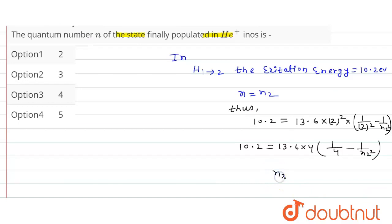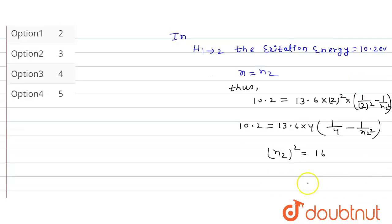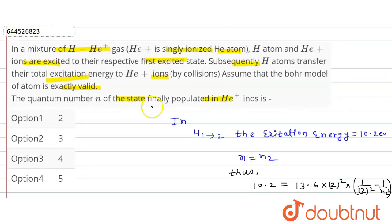So from here, n2 squared is equal to 16. So n2 value is equal to 4. See here, option third is the correct option, n2 value is equal to 4.